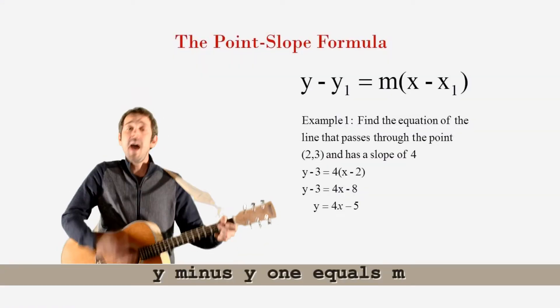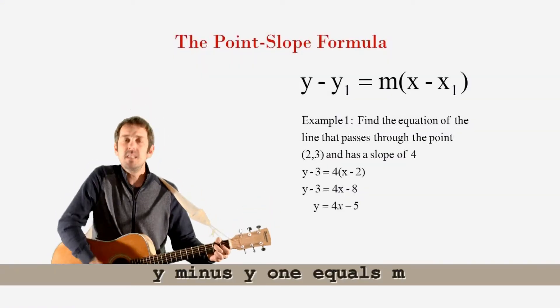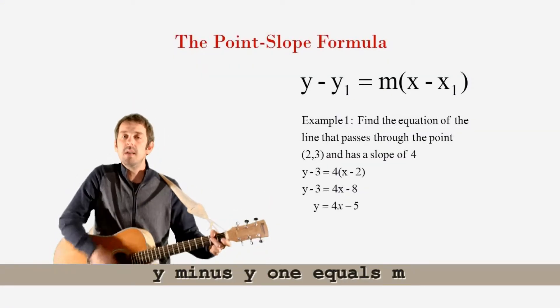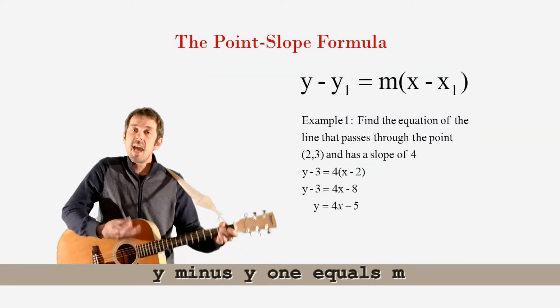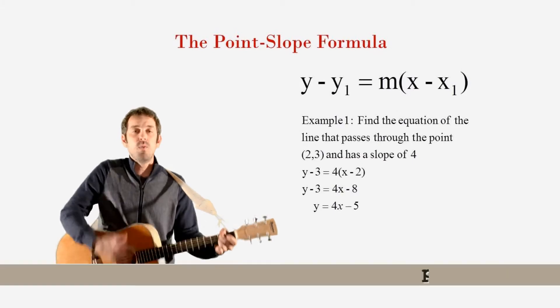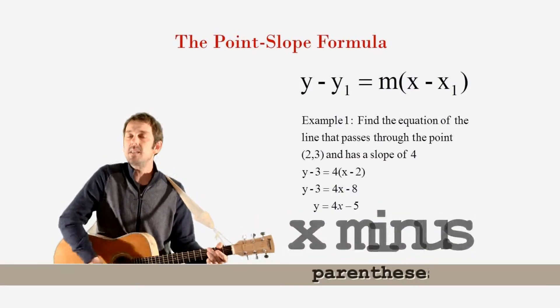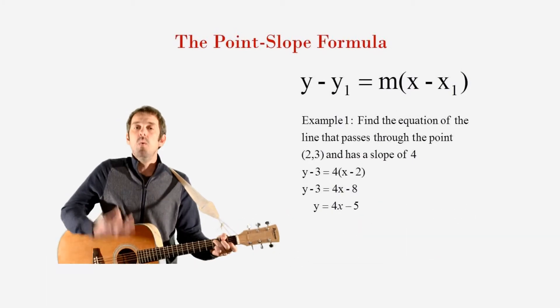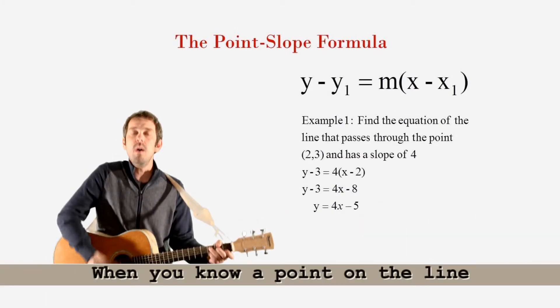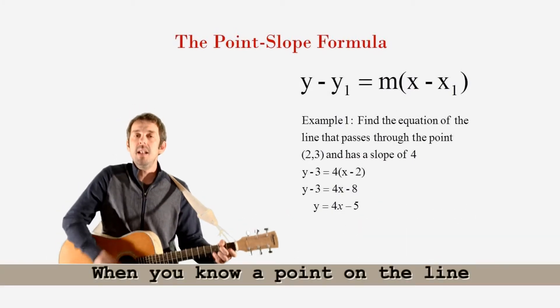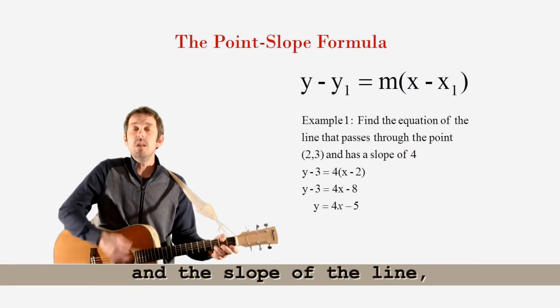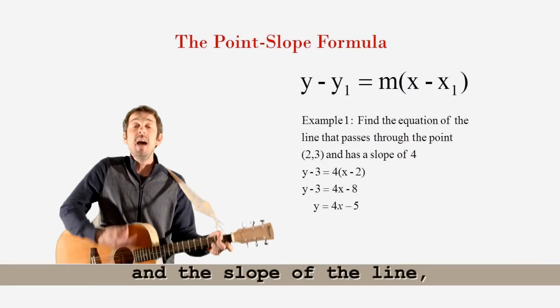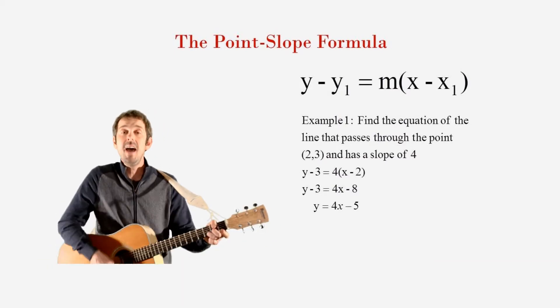y minus y1 equals m parenthesis x minus x1, when you know a point on the line and the slope of the line.